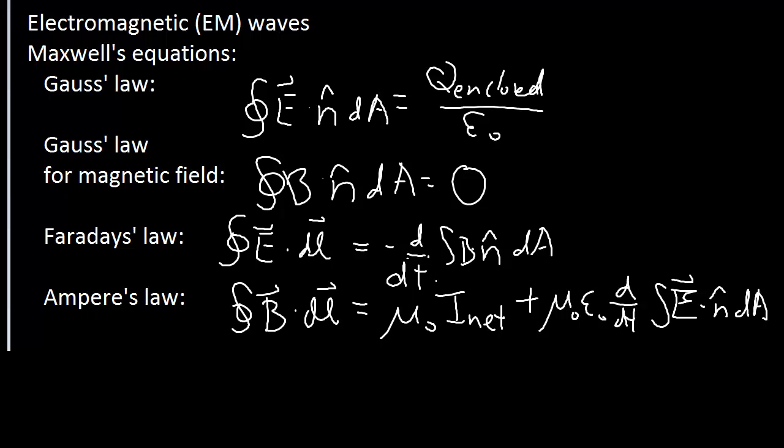You've got Gauss's law, Gauss's law for magnetic field, Faraday's law, and Ampere's law. You might want to copy that down. If this is too messy for you, I'm sure you can just Google or Wikipedia Maxwell's equations, and you'll see them in their nice, clean, mathematical form.